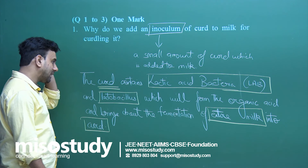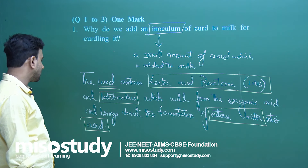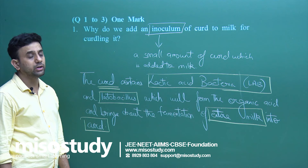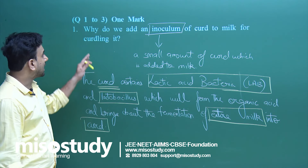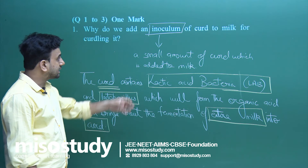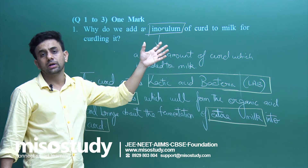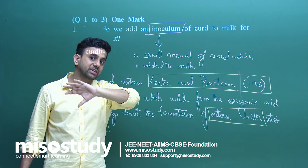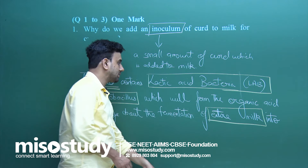The curd contains lactic acid bacteria and Lactobacillus, which form organic acid and bring about the fermentation of entire milk into curd. That is why this inoculum of curd is added to milk — so that the bacteria present in the curd go into the milk, multiply rapidly, and convert the entire milk into curd.